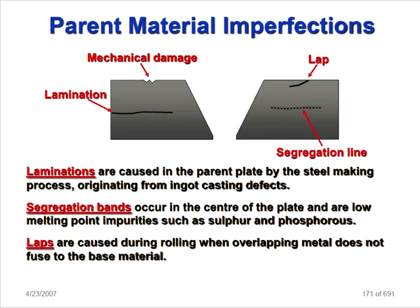The parent metal imperfections - we can get this type of information when we inspect the pipe at site. We can also find out some damage: mechanical damage, lamination, laps, and segregation lines. Lamination is caused in the parent plate by the steel-making process, originating from the ingot casting defect. The segregation band occurs in the center of the plate.